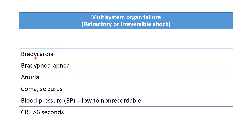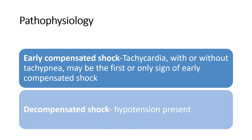In refractory shock, heart rate and respiratory rate both will fall. Anuria will be present. The patient will have coma or seizures can occur during this stage. BP will be low to not recordable and CRT will be prolonged more than 6 seconds. So in early compensated shock, the patient will have only tachycardia and tachypnea — this is the only first sign of the early stage of compensated shock, and we have to identify the patient during this stage.